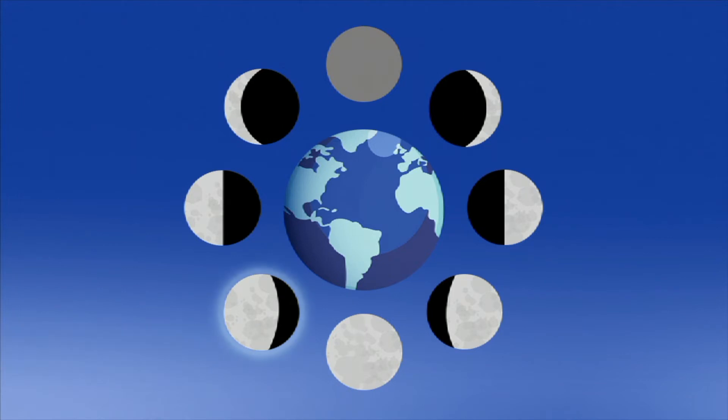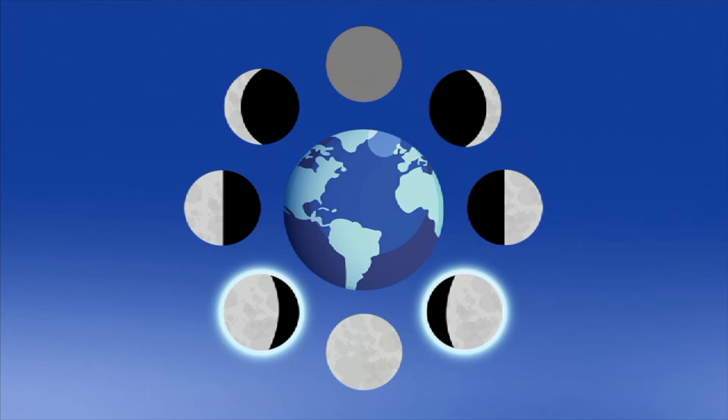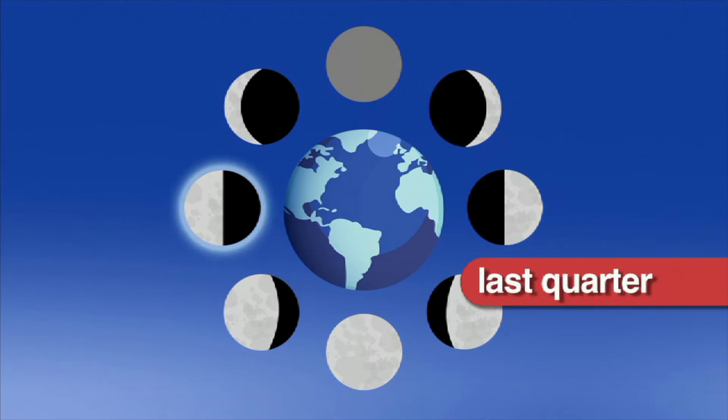The next phase is called waning gibbous. This looks just like the waxing gibbous phase, except the Moon is now on its way to getting smaller. After waning gibbous, the Moon reaches the last quarter phase.